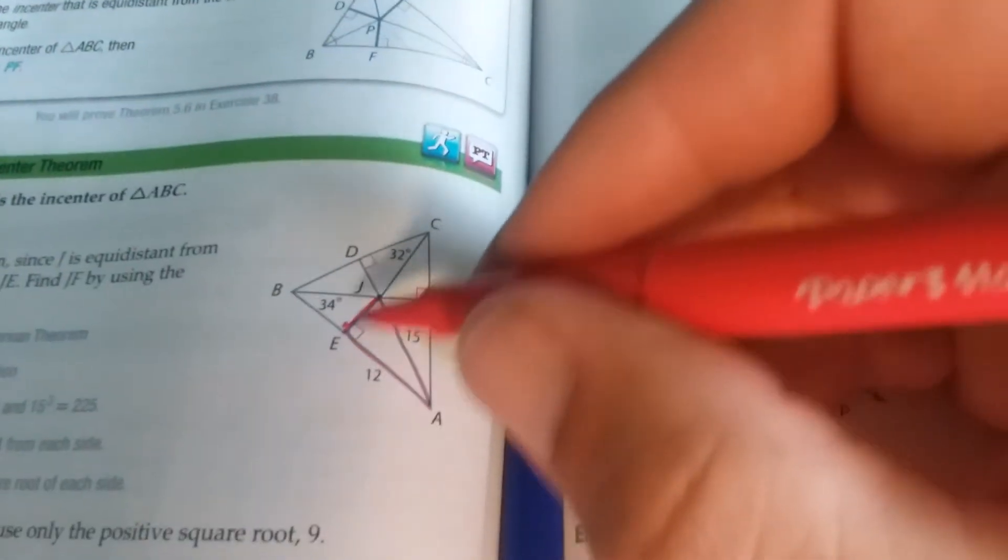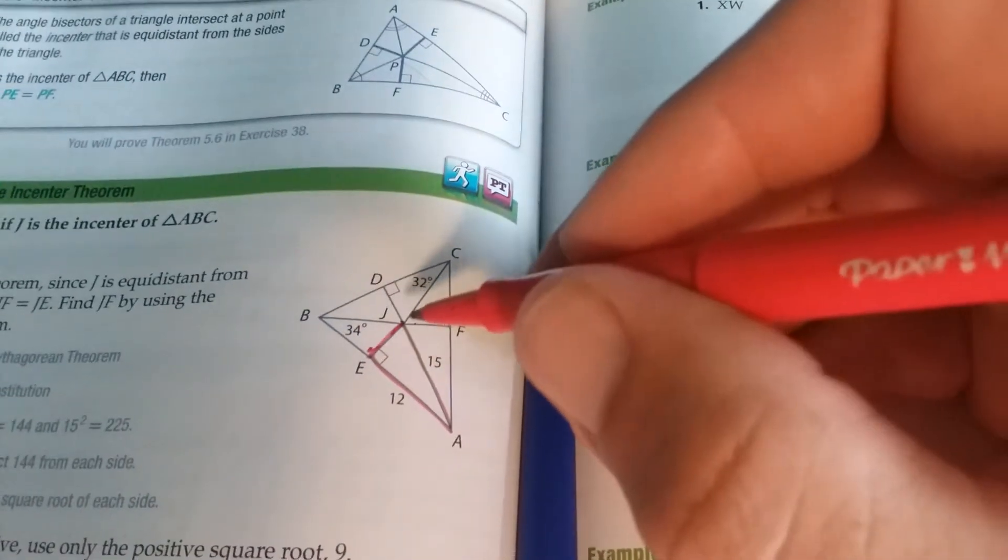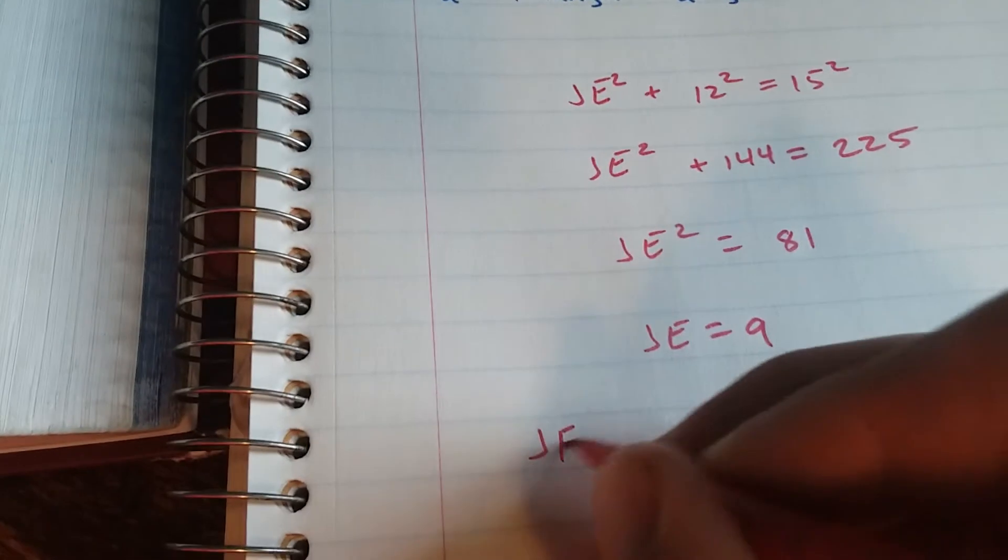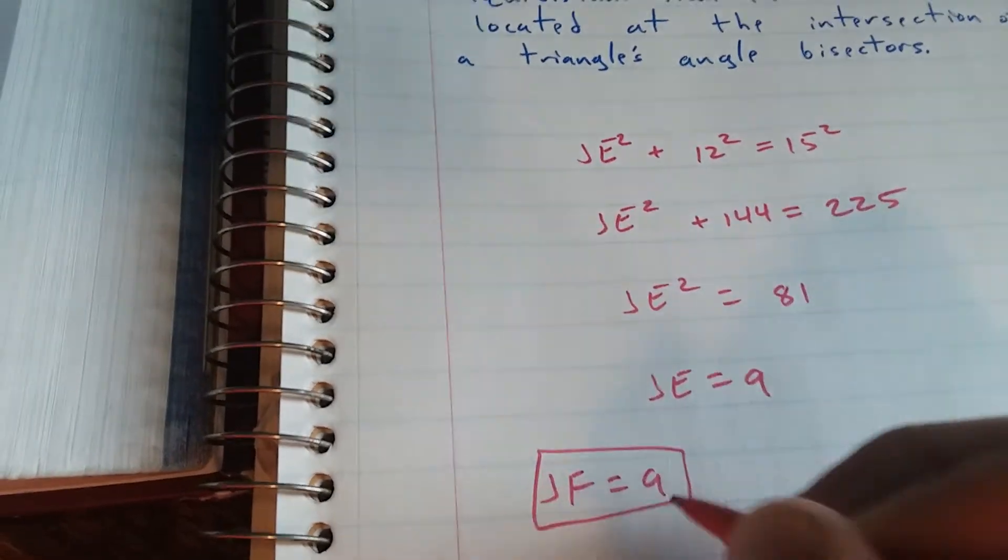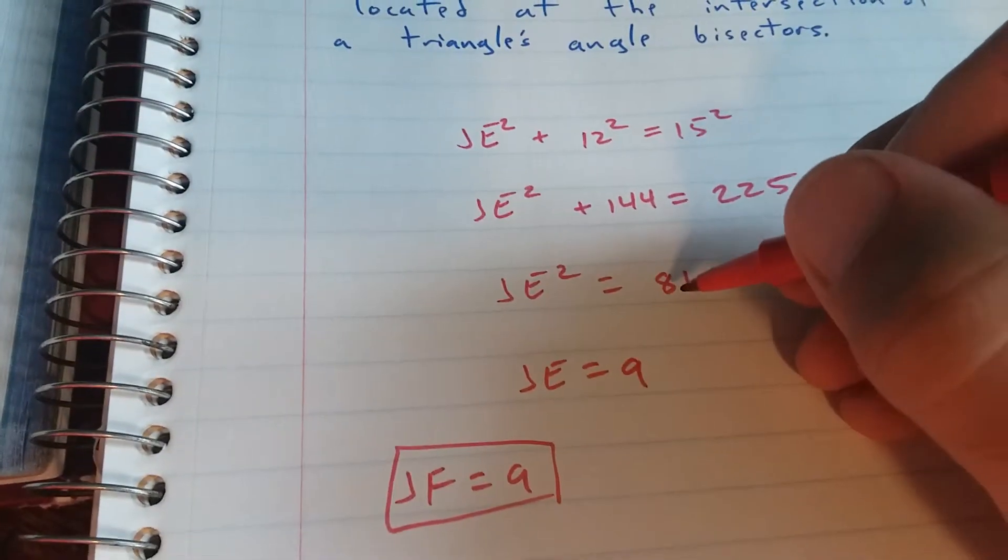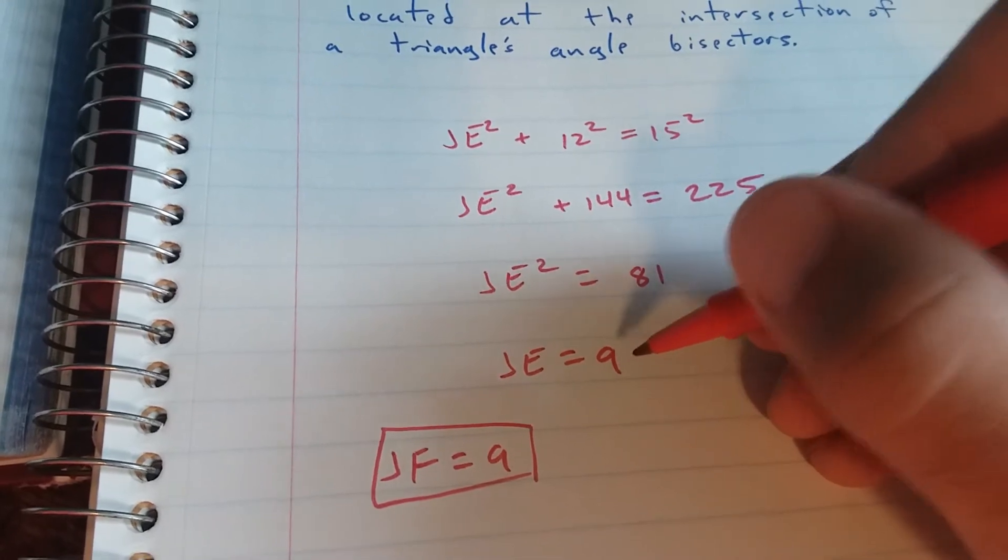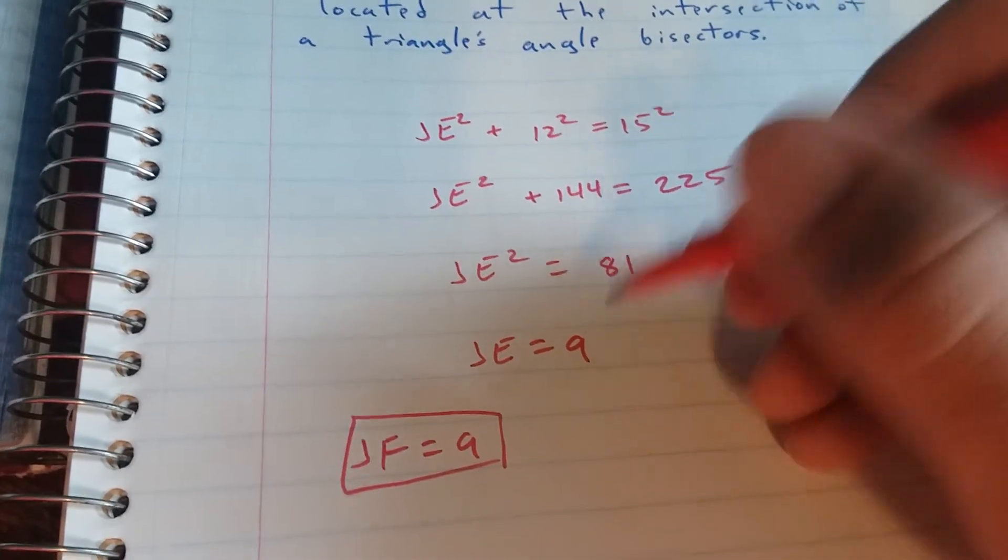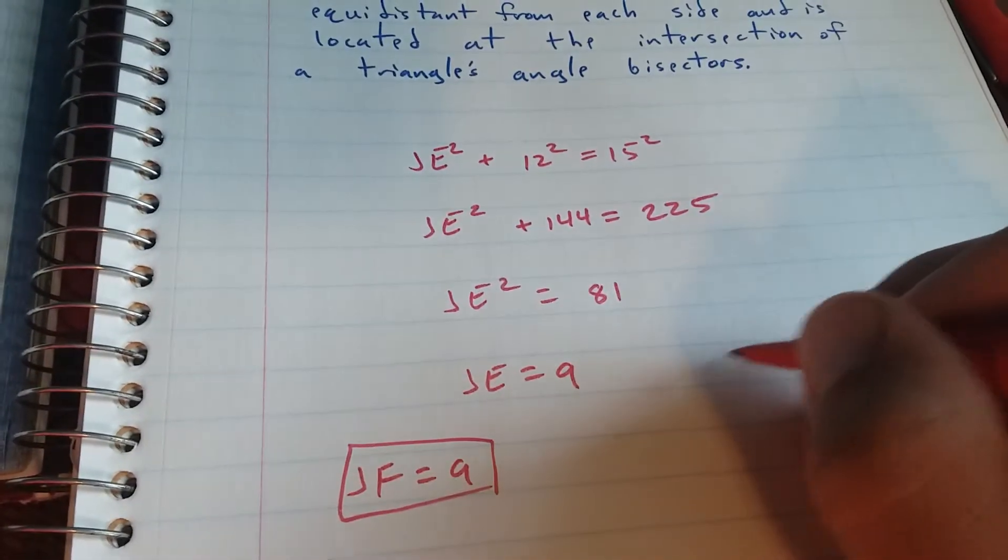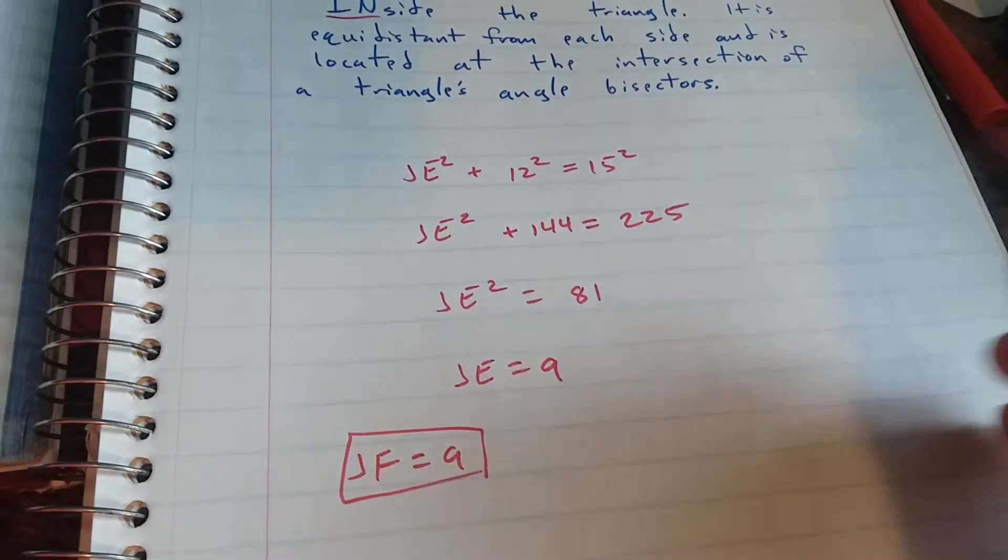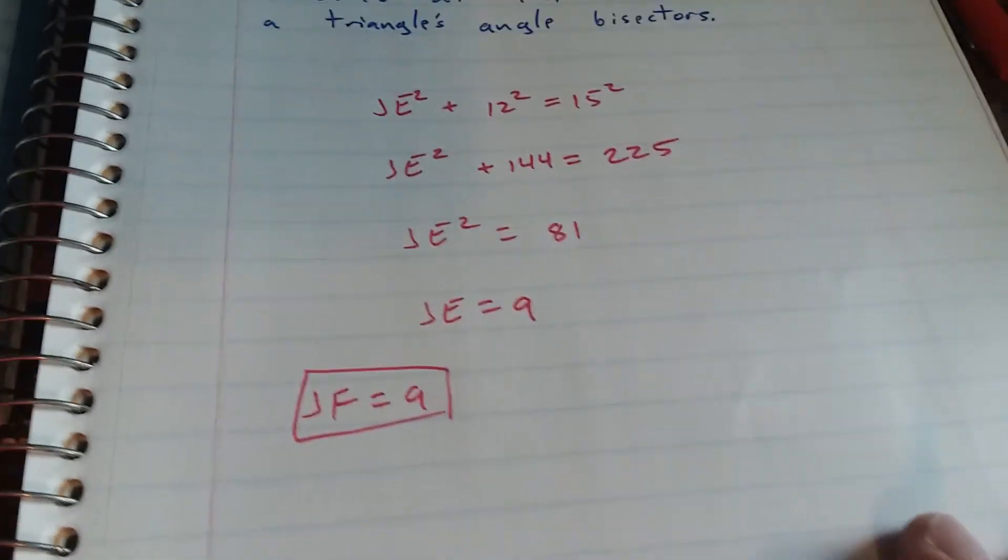Well, if JE is 9, since JE and JF are the same length, JF equals 9. Keep in mind, when I took the square root here, I only wrote the positive value because distances are only positive. If you got plus or minus 9, cross off the minus 9 because distance is always positive.